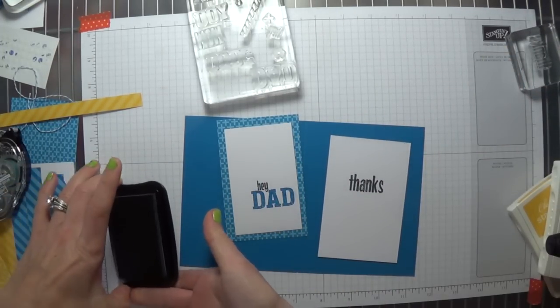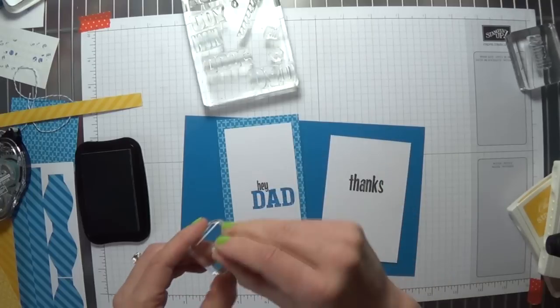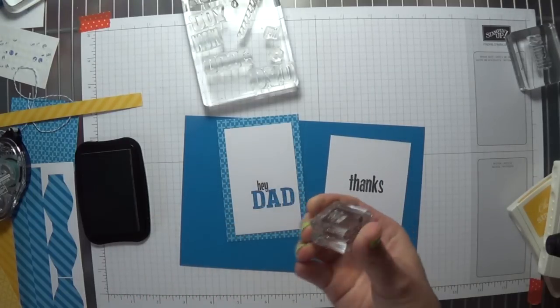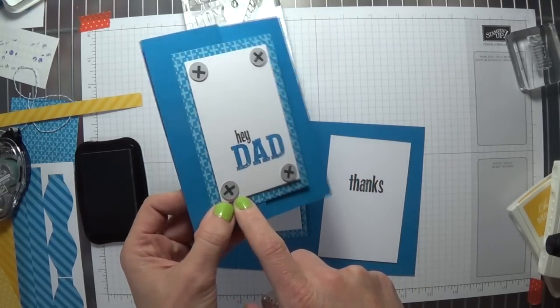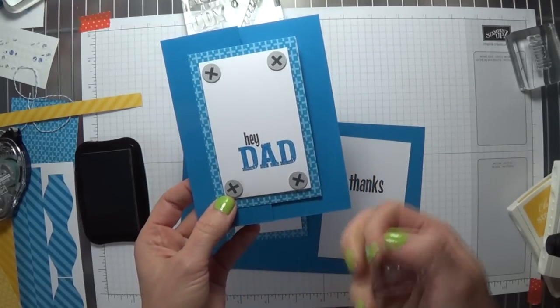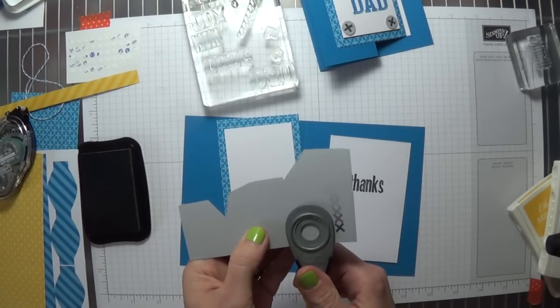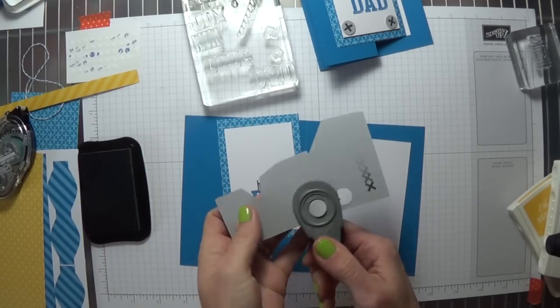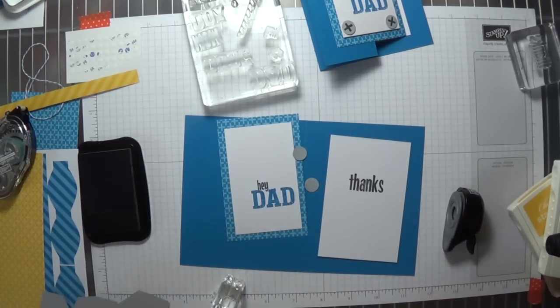Okay I'm not quite done with my black so before I go too far I'm going to make the little screw heads kind of thing that I use to embellish the front of my card. You're going to just take a scrap piece of smoky slate and if you want you can go ahead and punch them out first or you can stamp first. Whatever you prefer.